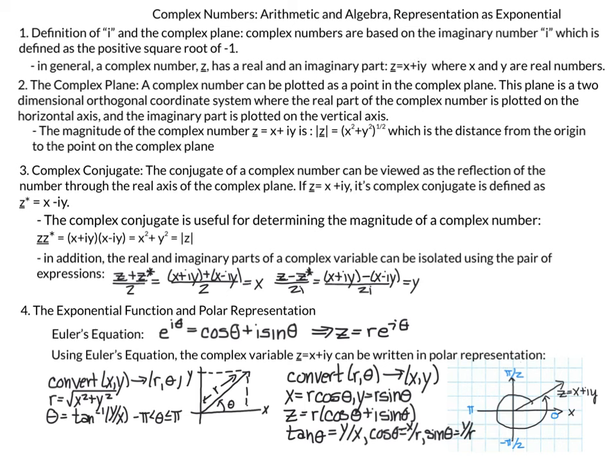It takes a plane to represent a single complex number, which is what makes complex analysis a whole different subject from regular calculus. In calculus, you only needed a single axis — the x-axis could represent all your real numbers. For complex numbers, you need the entire plane just to represent the numbers. The next topic is the complex conjugate: if z equals x plus iy, its complex conjugate, denoted with an asterisk, is equal to x minus iy — you simply make the imaginary part negative.